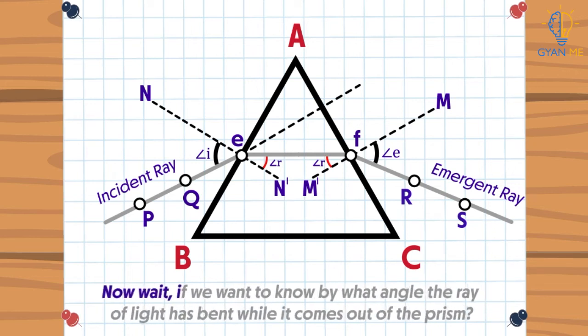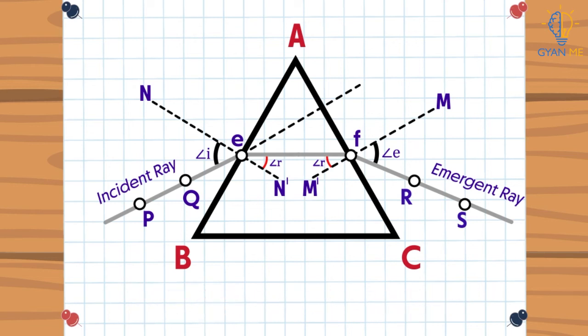Now wait, what if we want to know by what angle the ray of light has bent while it comes out from the prism? Let's see. See the incident ray. If the prism was not here, the ray would have travelled in this direction. Because of the prism, the ray has deviated from its path like this.